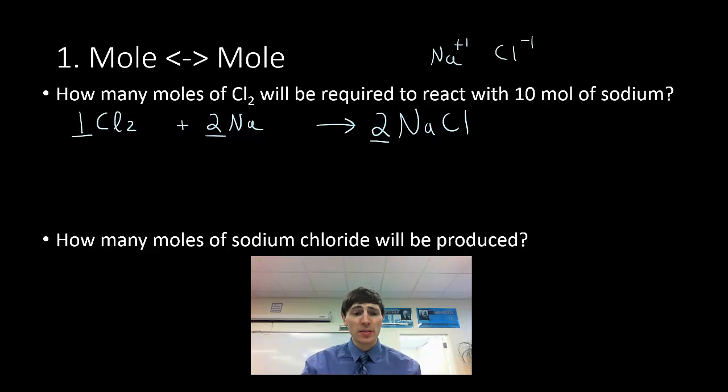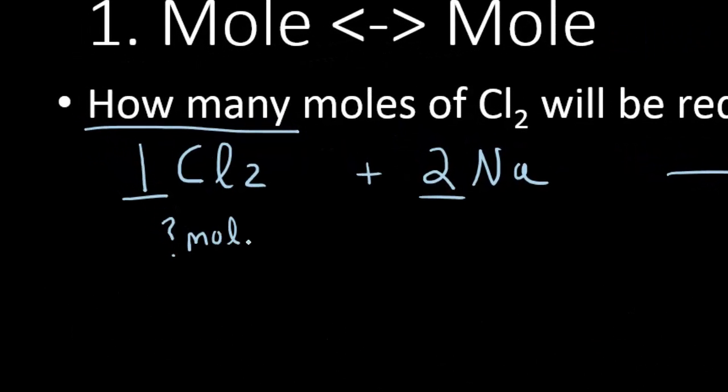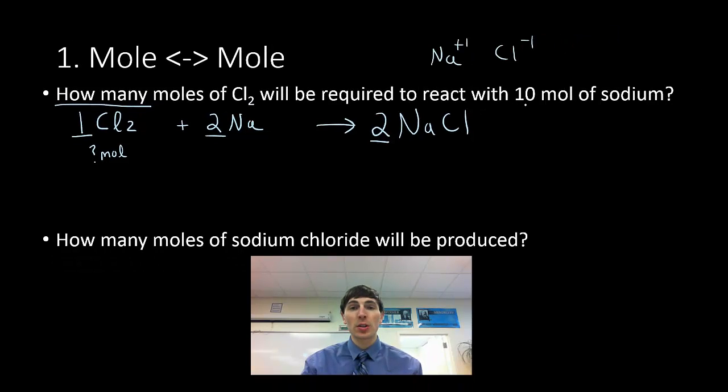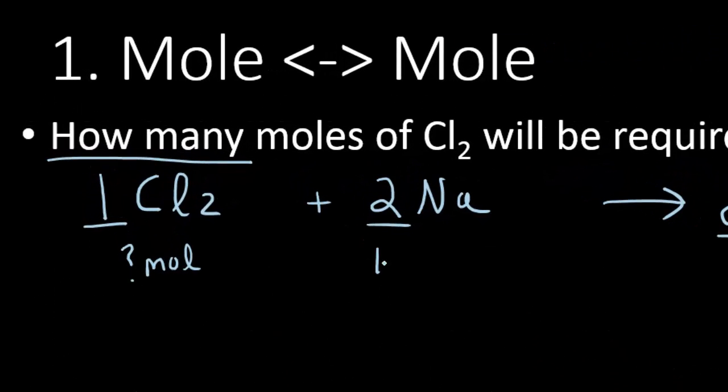The second step says, determine your known and unknown quantities. So the question says, how many? Question mark. We don't know. So we're going to solve for it. So I'm going to write, underneath my Cl2, I'm going to write, question mark, moles. I don't know how many moles. I'm looking for that. We'll be required to react with 10 moles of sodium. 10 moles sodium. I'm underlining this. I know what this is. I know I have 10 moles of sodium. So I'm going to write 10 moles underneath of my starting quantity.